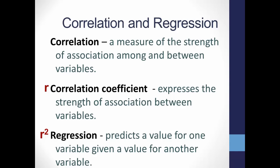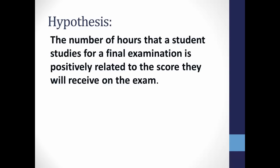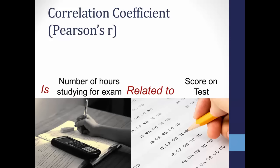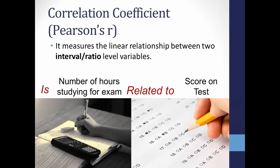Assume that you have a hypothesis that says the number of hours a student studies for a final exam is positively related to the score they will receive on that exam. Two variables — both continuous-level — are number of hours studying and score on the exam. You can calculate a mean on both of these variables. To determine if a relationship exists, you would calculate Pearson's r, because it measures the linear relationship between two continuous-level variables, gathering interval or ratio-level data.